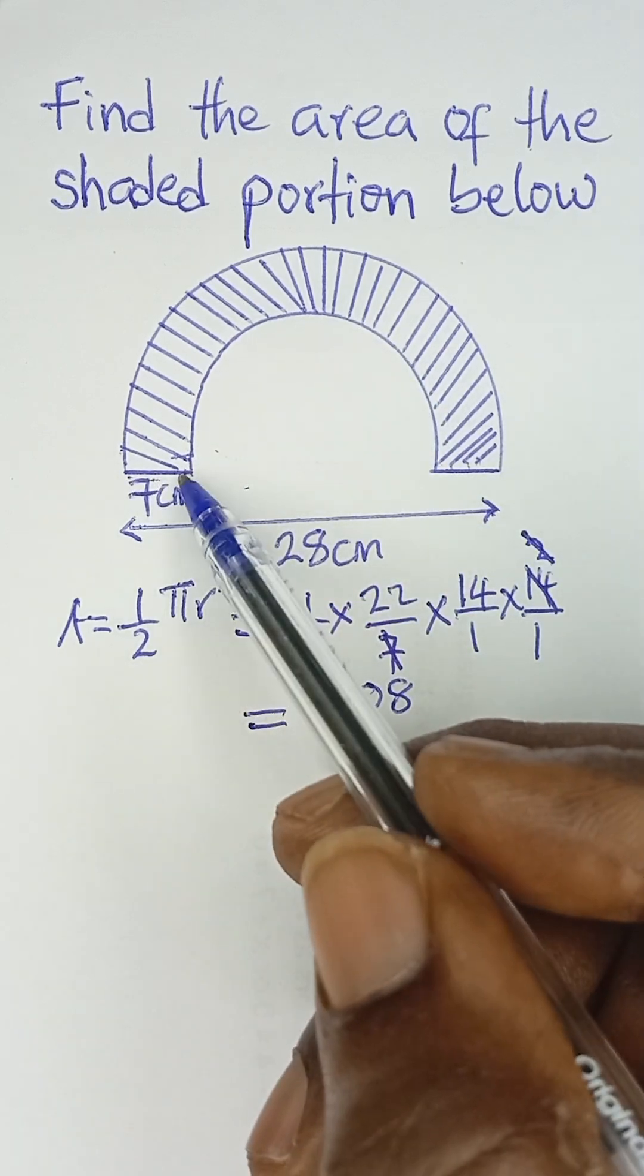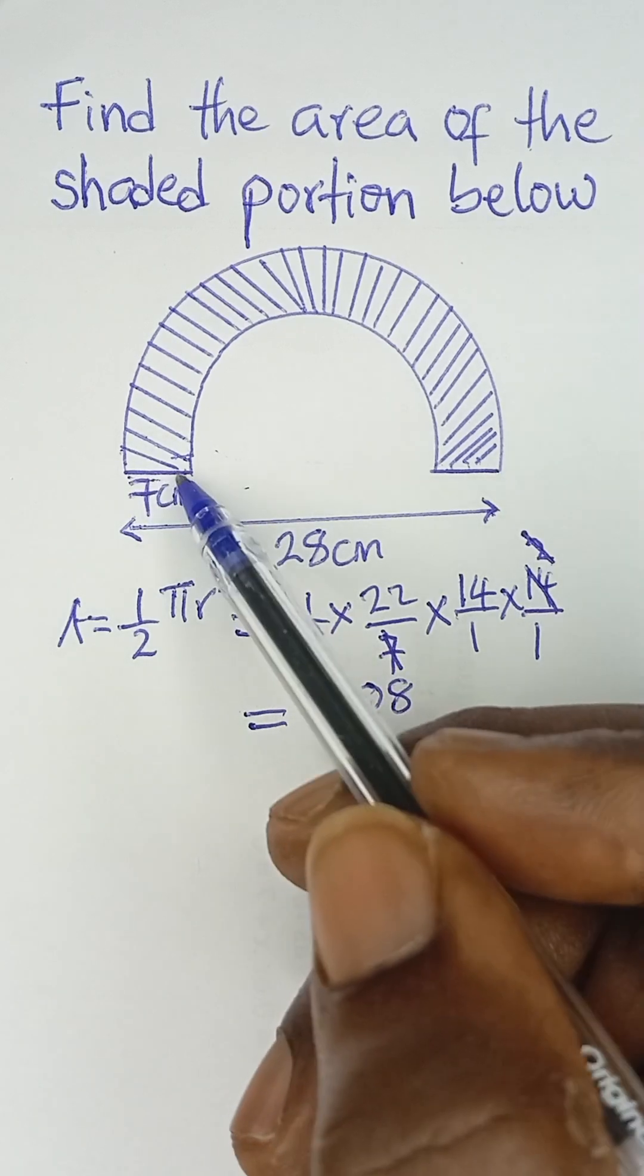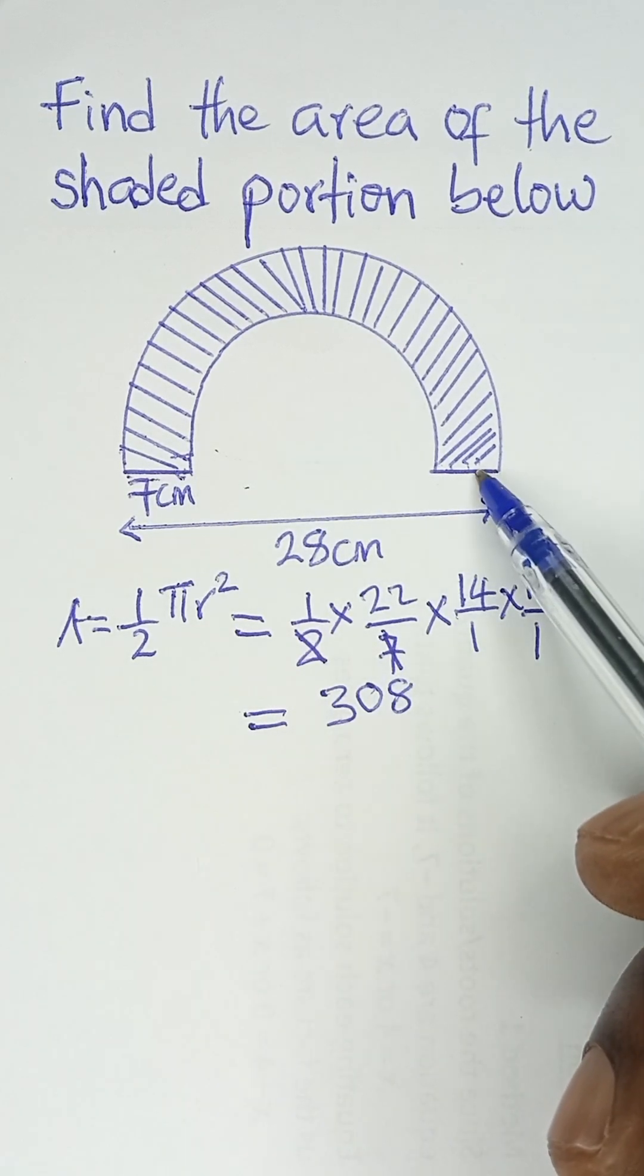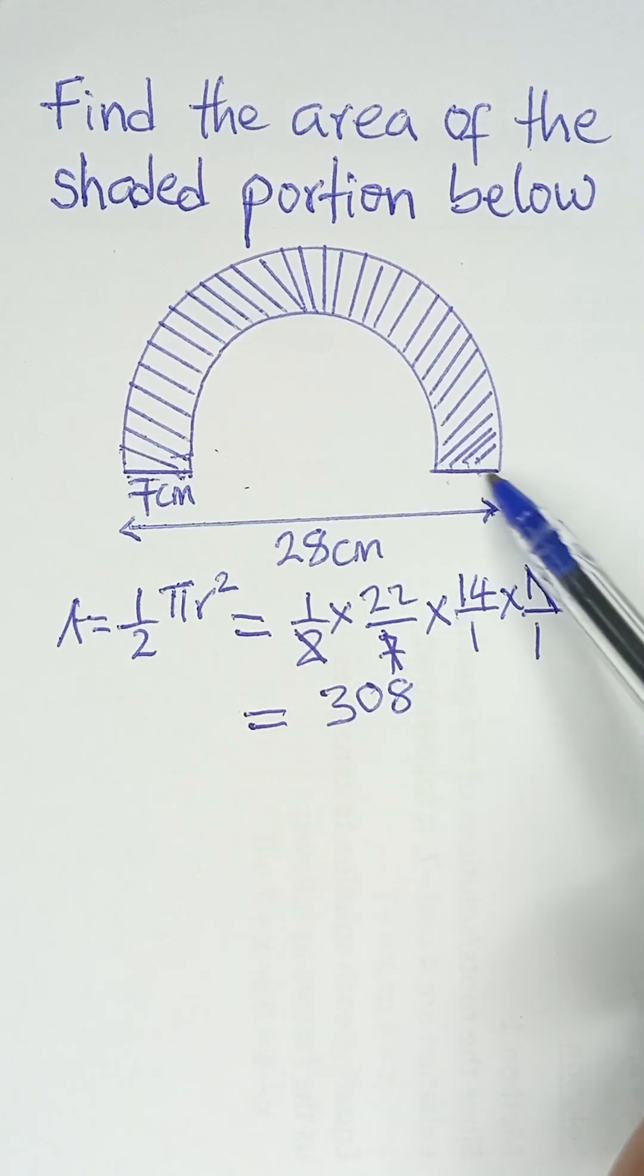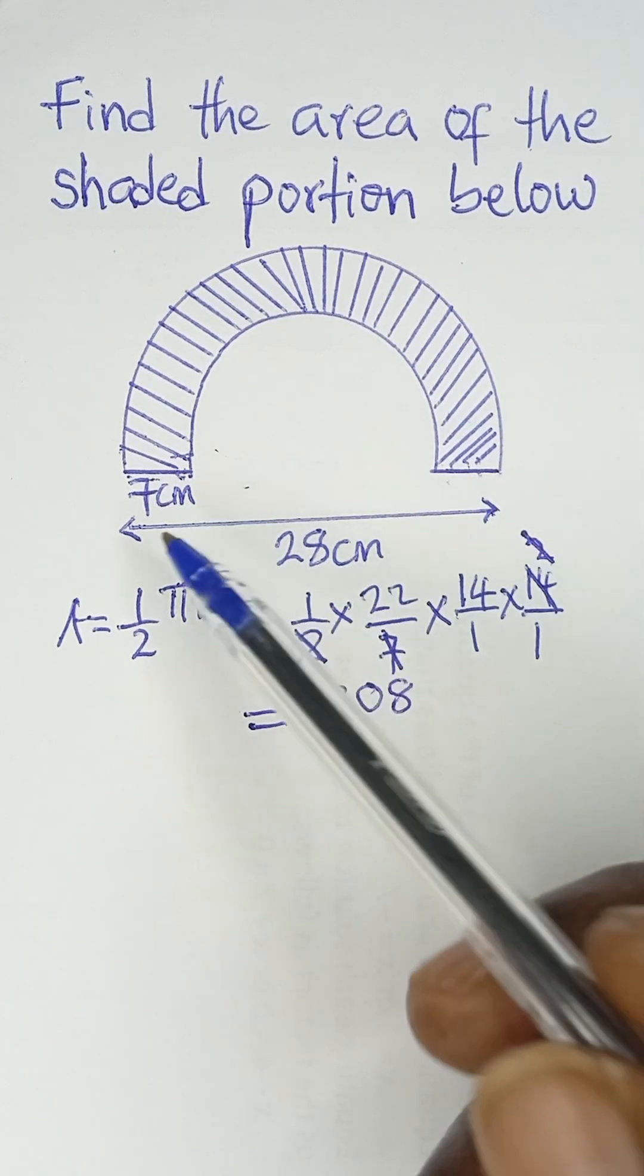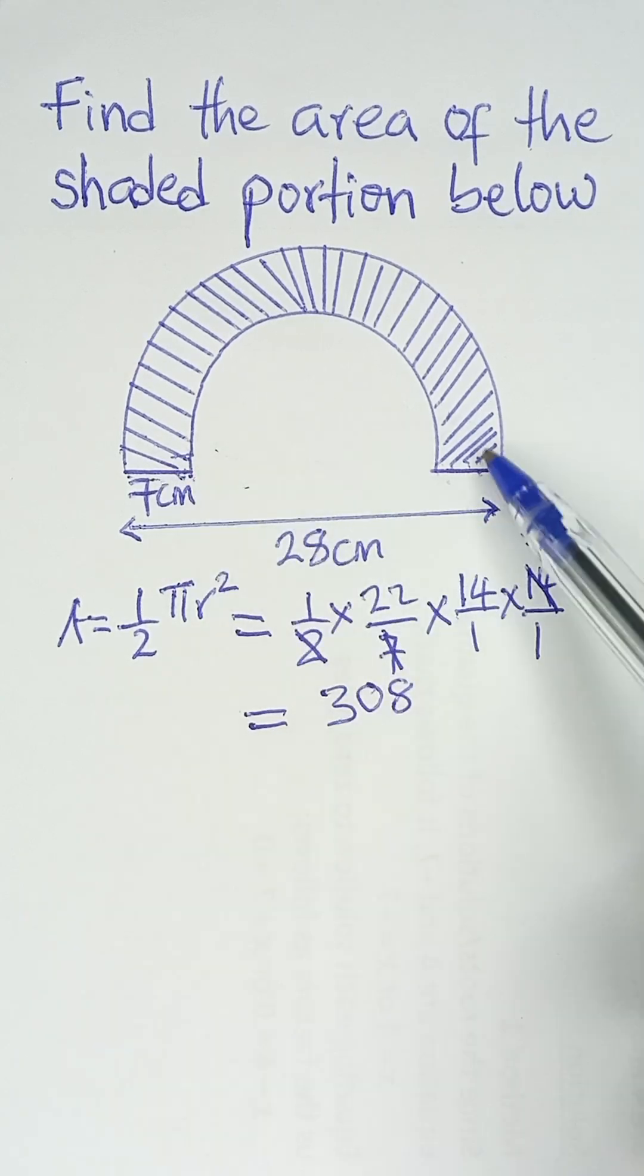For this one, you are given that this is 7. So this part will also be 7 centimeters. So 7 plus 7, that makes it 14. So if this place and this length give us 14, that means to get this remaining part, it has to be 28 minus 14.